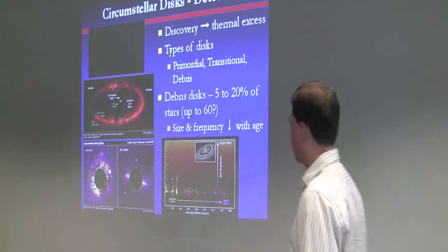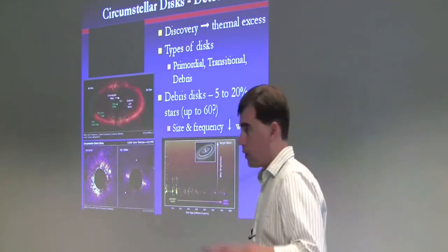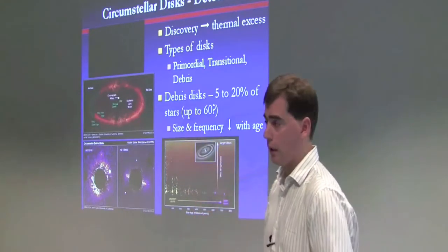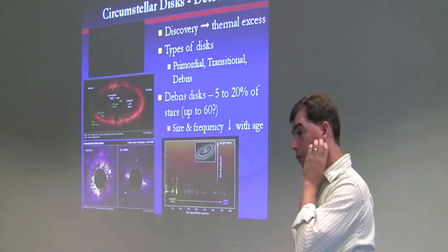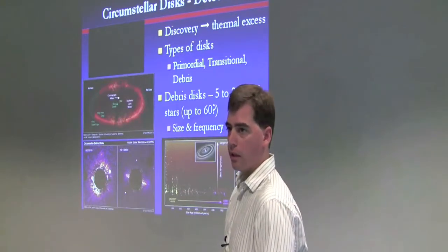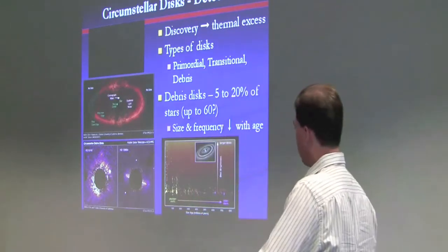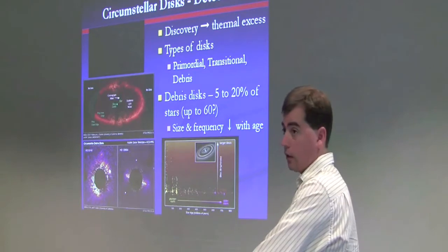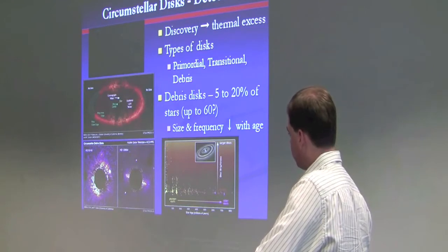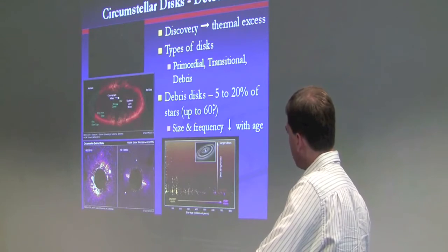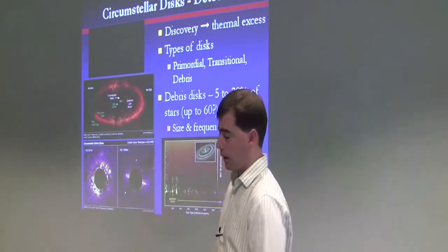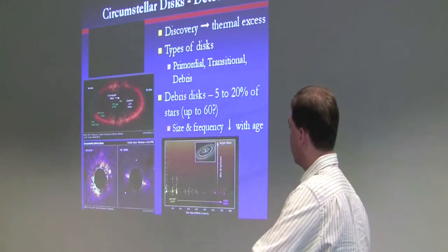There are different types of disks. Primordial disks are original debris that form with the star. So as the star forms, material accretes to the center to form the star. And there's a bunch of gas and dust left around the star. Those are common, really common, almost universal for stars that are on the order of a million years old. They become rare at ages of 10 million years and almost absent by 30 million years. But there is infrared excess detected around older stars. These are what we call debris disks.